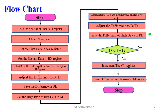The flowchart begins: start the program, load the address of data in the SI register, clear the CL register, and get the first data (the minuend) into AX. Get the second data (the subtrahend) into BX. Perform subtraction between AL and BL to get the difference of the low bytes in AL. The result is not a BCD number, so correct it using the DAS command. Then save the difference in the DL register.